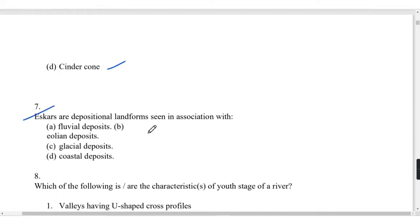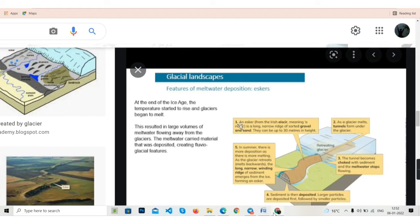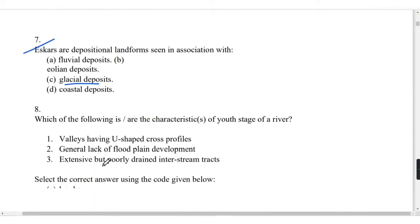Eskers are depositional landforms seen in association with glacial deposits. You can see this ridge portion is called esker, which means it is a long narrow ridge of sorted gravel and sand. They can pile up to 30 meters in height. These are the features of meltwater deposition of glacial landscape.